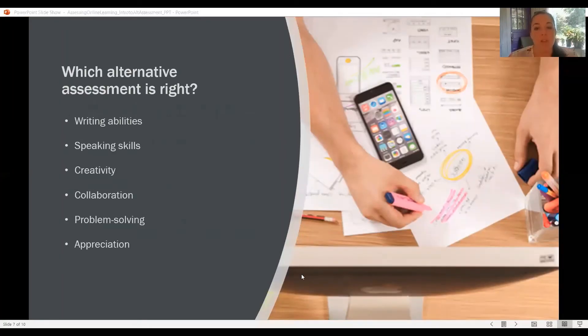How do you decide which alternative assessment to select? The best thing to do is to think about the knowledge or the skill that you're wanting your students to demonstrate. Do you want to see students' writing ability? Would you like to see their speaking skills? Perhaps you'd like to assess their creativity or problem solving, or you're interested in assessing their ability to collaborate with their peers. Maybe even you're wanting to see if they've grown in their appreciation towards a course topic.